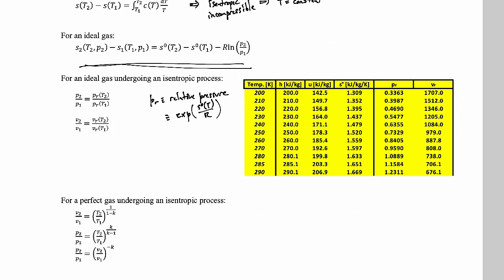But what we use that relative pressure for is defined pressures in an ideal gas undergoing an isentropic process. So the pressure ratio p2 over p1 is just pr, which is found at temperature 2, over pr, which is found at temperature 1.